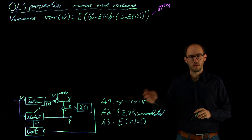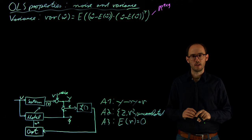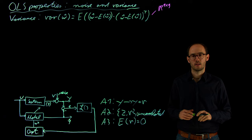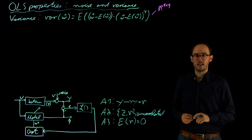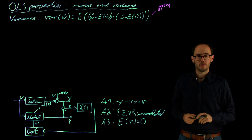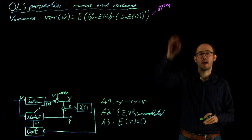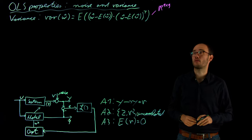Welcome. In this video, I would like to investigate the variance or covariance of the ordinary least squares estimator with respect to the estimated parameter vector w_hat. The variance here becomes a variance matrix or covariance matrix, which has a square form of q times q elements.